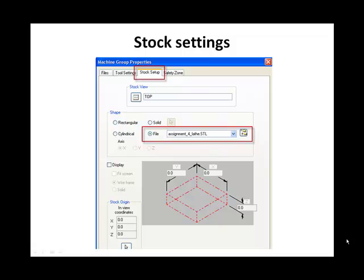You can create your own STL file by drawing the part geometry using either surfaces or solids and then selecting File Save As .STL.